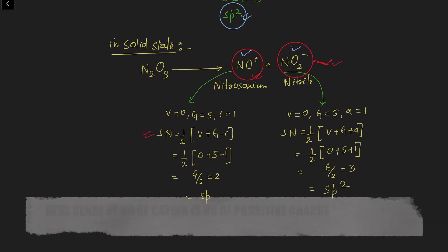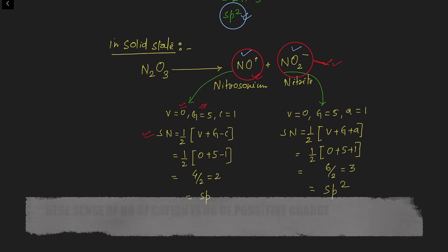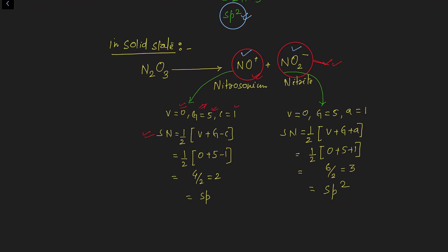Using the formula: for NO+, oxygen is divalent so monovalent atoms = 0, valence electrons of nitrogen = 5, cation charge = 1, giving sp hybridization. For NO2−: monovalent atoms = 0, valence electrons of nitrogen = 5, anion charge = 1. Putting all values into the anion formula gives sp2 hybridization for nitrogen in NO2−.